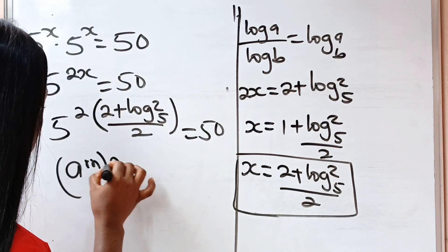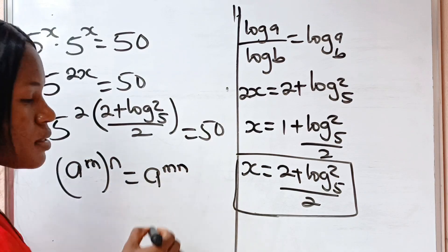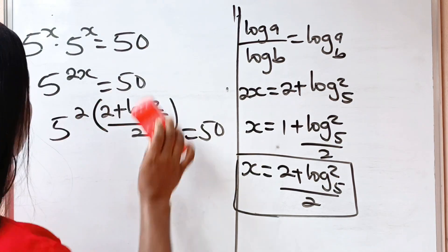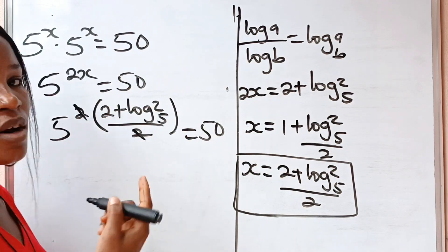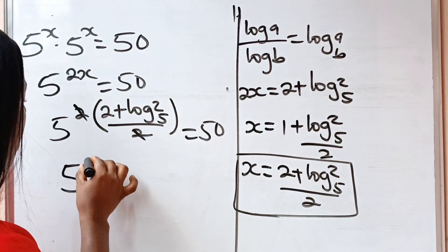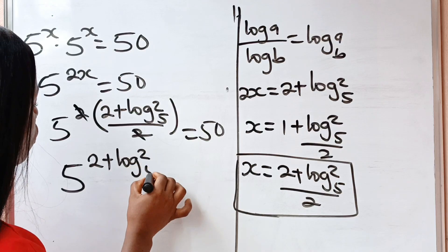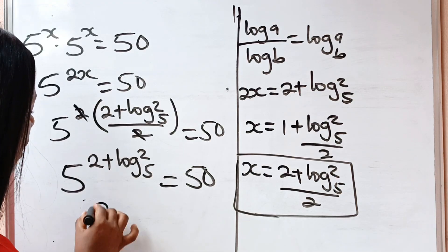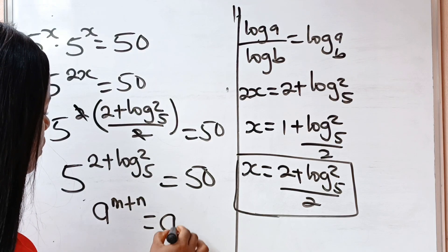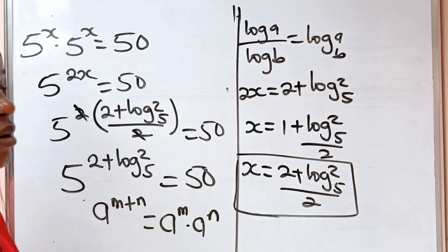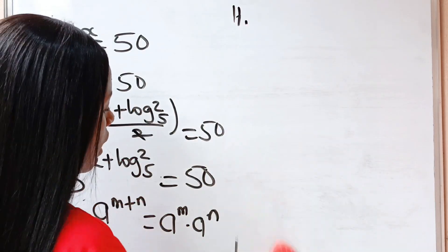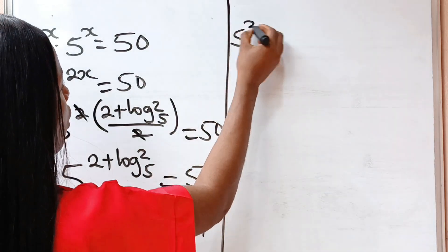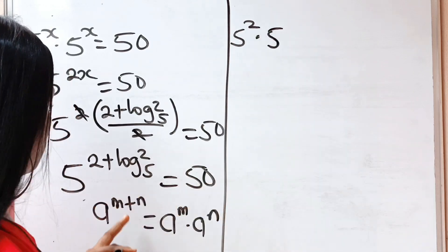Remember that when you have a to the power of m raised to the power of n, this equals a to the power of m times n. So the 2 in the numerator and the 2 in the denominator cancel each other, and what we have is 5 to the power of (2 plus log base 5 of 2) is equal to 50. Using the law that a to the power of m plus n equals a to the power of m times a to the power of n, we rewrite this as 5 to the power of 2 multiplied by 5 to the power of log base 5 of 2, equal to 50.